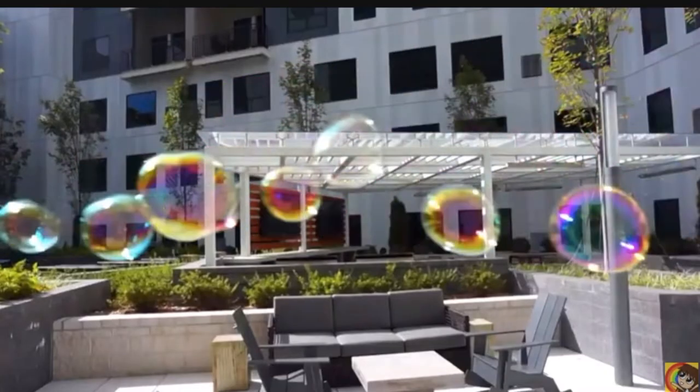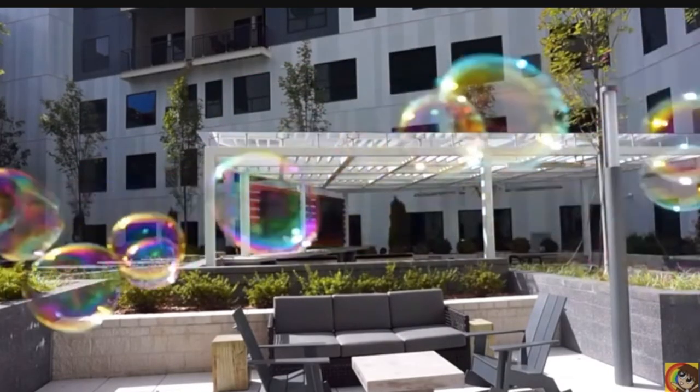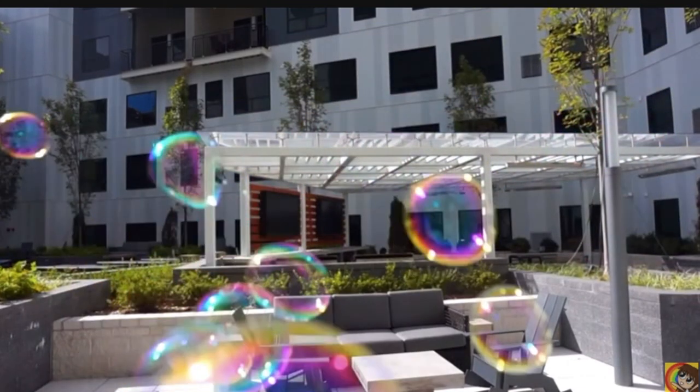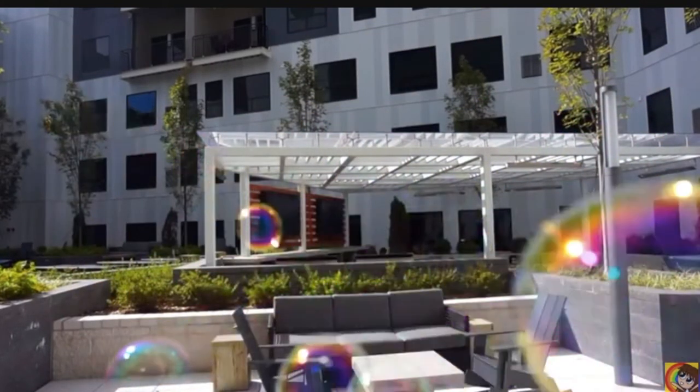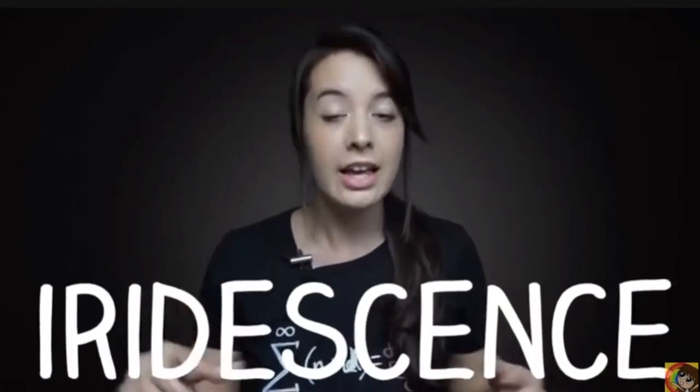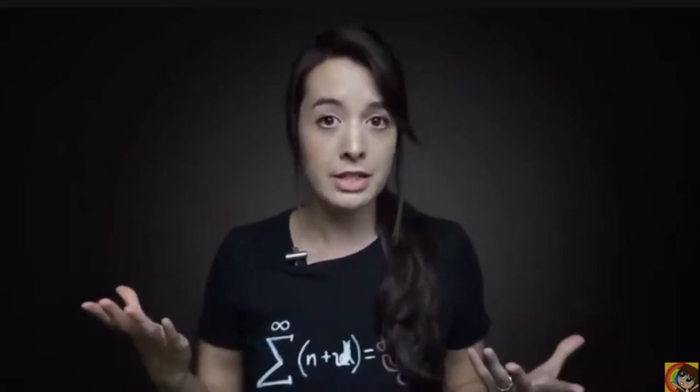This thickness varies all over the soap bubble so different wavelengths of light are being cancelled out and amplified at different parts of the bubble and that's why we see different colors in different areas. This phenomena is called iridescence and it explains why some substances seem to change color when sunlight hits them.